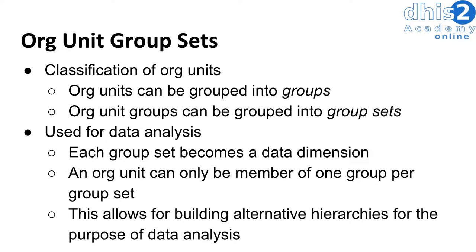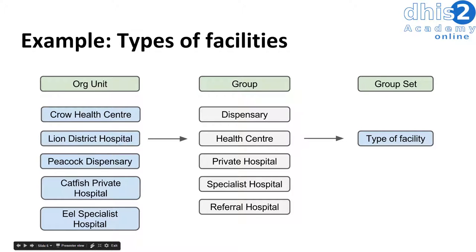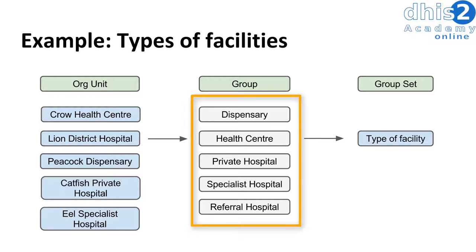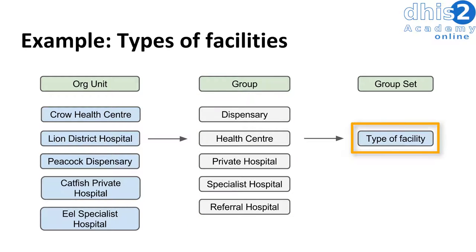The first example we can discuss is types of facilities. In Training Land there are a number of different facility types: health centers, dispensaries, private hospitals, and specialist hospitals. We can take all facilities that meet each criteria and divide them into individual groups. These groups can be further grouped together as the type of facility group set. Within the type of facility group set, the individual groups are dispensary, health center, private hospital, specialist hospital, and referral hospital. Each of these groups is further subdivided into the individual facilities that make them up.